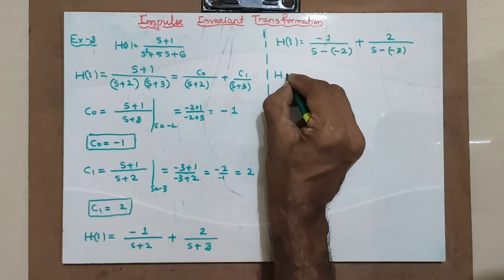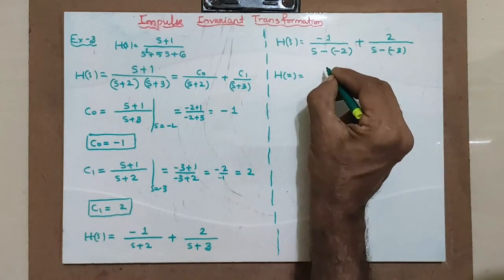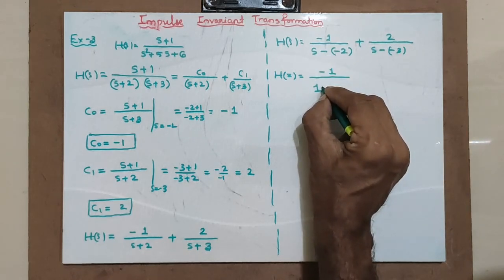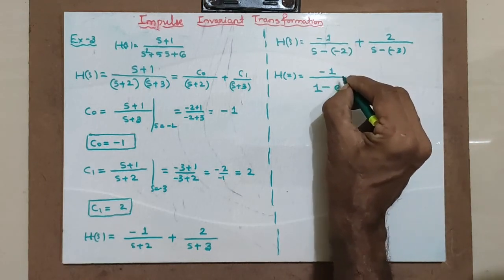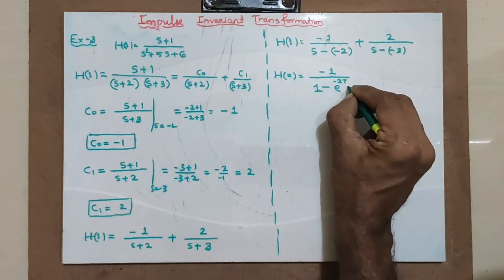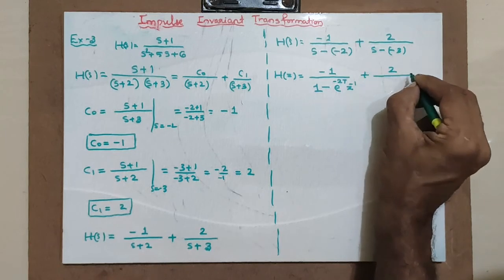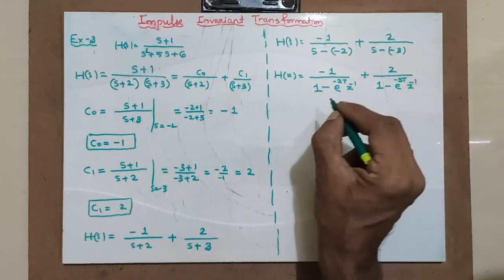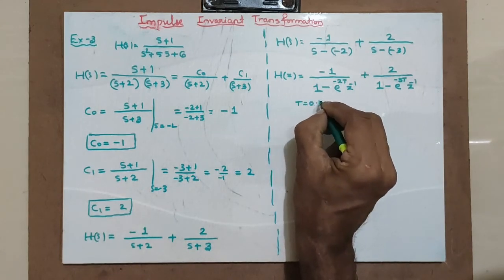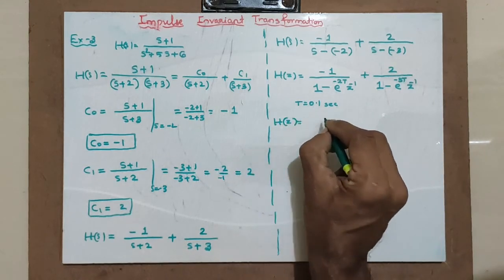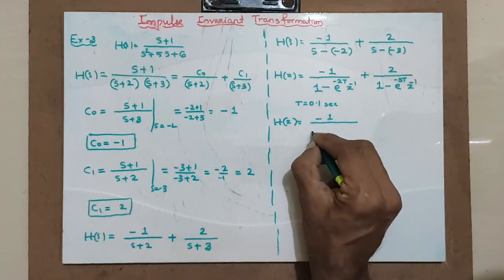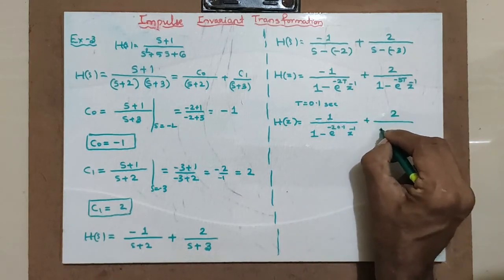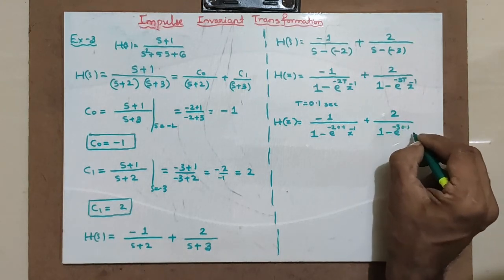Corresponding H(z) is equal to minus 1 divided by 1 minus e raised to (minus 2 times T) times z raised to minus 1, plus 2 divided by 1 minus e raised to (minus 3 times T) times z raised to minus 1. With T equal to 0.1, this becomes minus 1 divided by 1 minus e raised to minus 0.2 times z raised to minus 1, plus 2 divided by 1 minus e raised to minus 0.3 times z raised to minus 1.